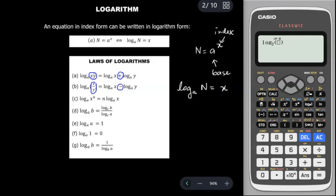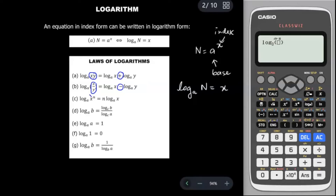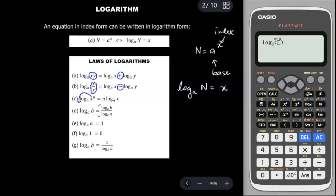For law (c): log base a of x to the power n — the n can be brought down, so it becomes n log base a of x. For law (d), change of base: log base a of b equals log base c of b over log base c of a — put log c on top and bottom, with b on top and a at the bottom.